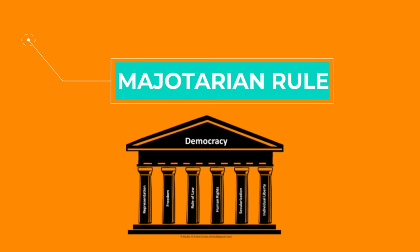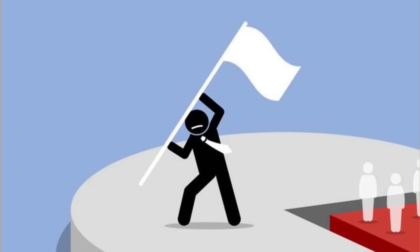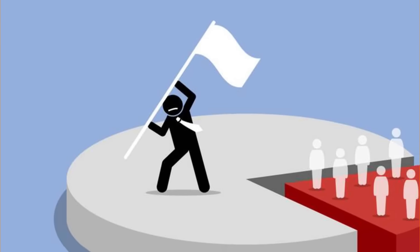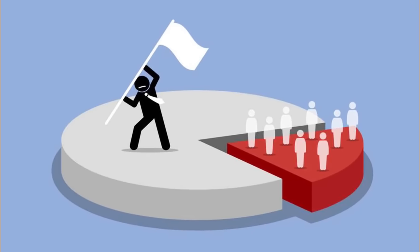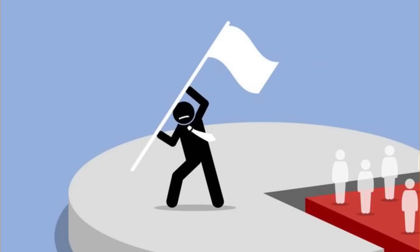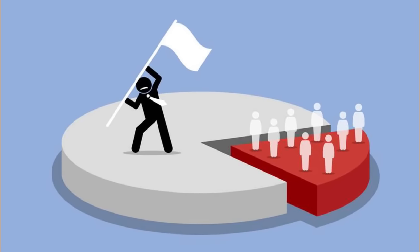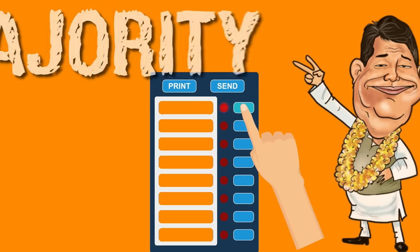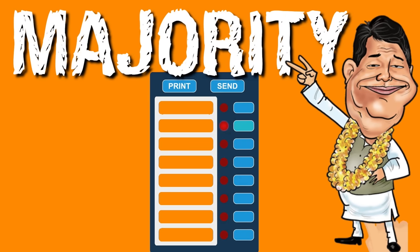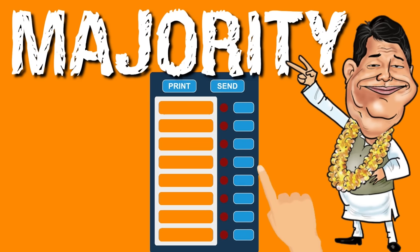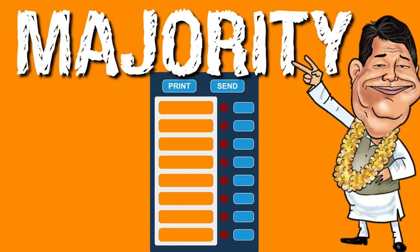The second point is that there is a majoritarian rule in democracy, so it is very important to understand what majority means. Majority can mean the religious group or population group that is largest in the country will rule, or it can mean whichever candidate or party gets the most votes in elections and achieves a majority.